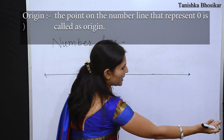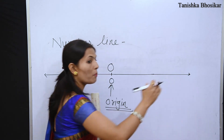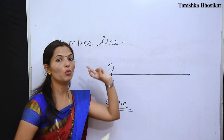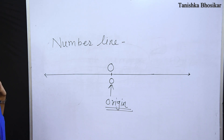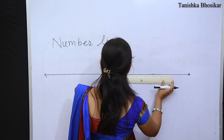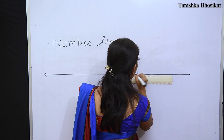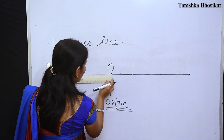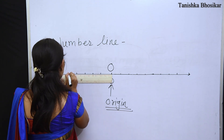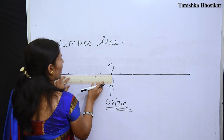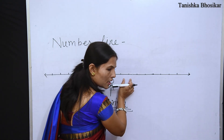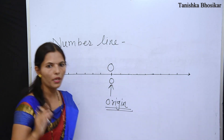From the origin, going to the right side gives positive numbers, and going to the left side gives negative numbers. When we draw a number line, the right side of origin has positive numbers and the left side has negative numbers. The first step to draw a number line is to make distance between each mark 1 cm. The distance between two marks must be the same — equal distance.